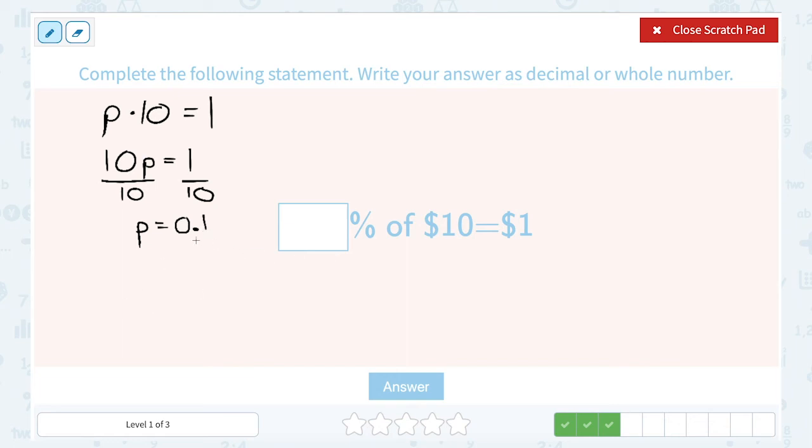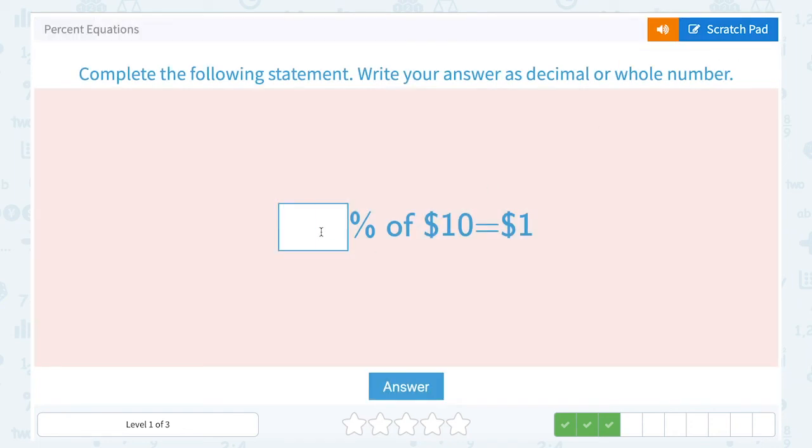Now remember, this is our decimal answer. Since I want to put it as a percent, 0.1 means the same thing as 10%. Because to go in the opposite direction, I would move my decimal point 2 places, which would make it 10.0. So 10% of $10 is $1.